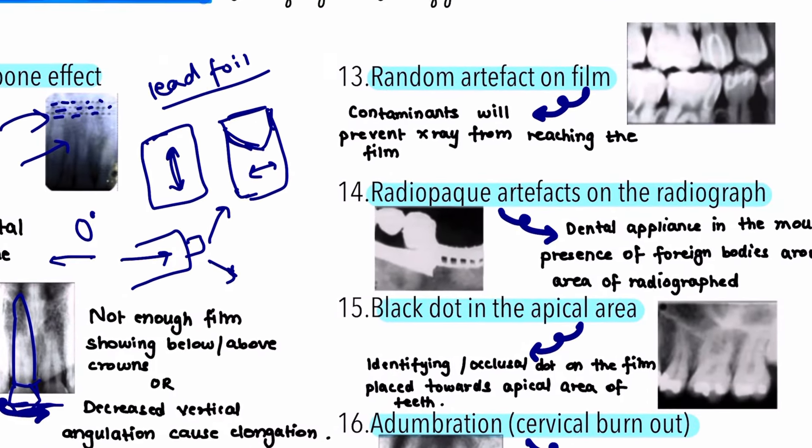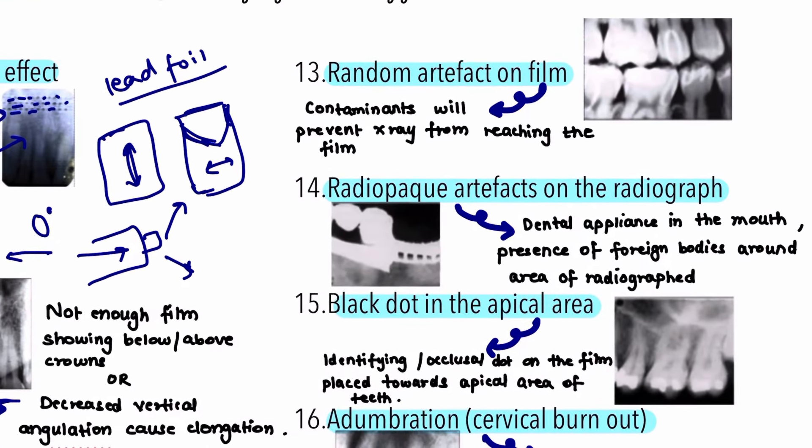The next error is random artifacts visible on the film. These can be contaminants like paper dust that prevent x-rays from reaching the film. Always check and clean the screens inside the cassettes for contaminants.